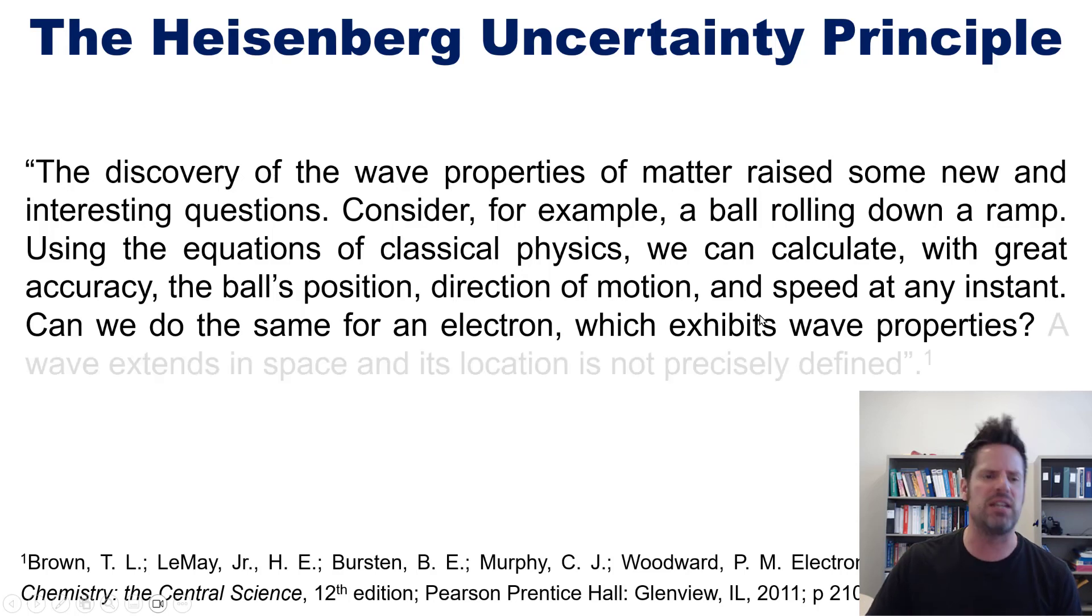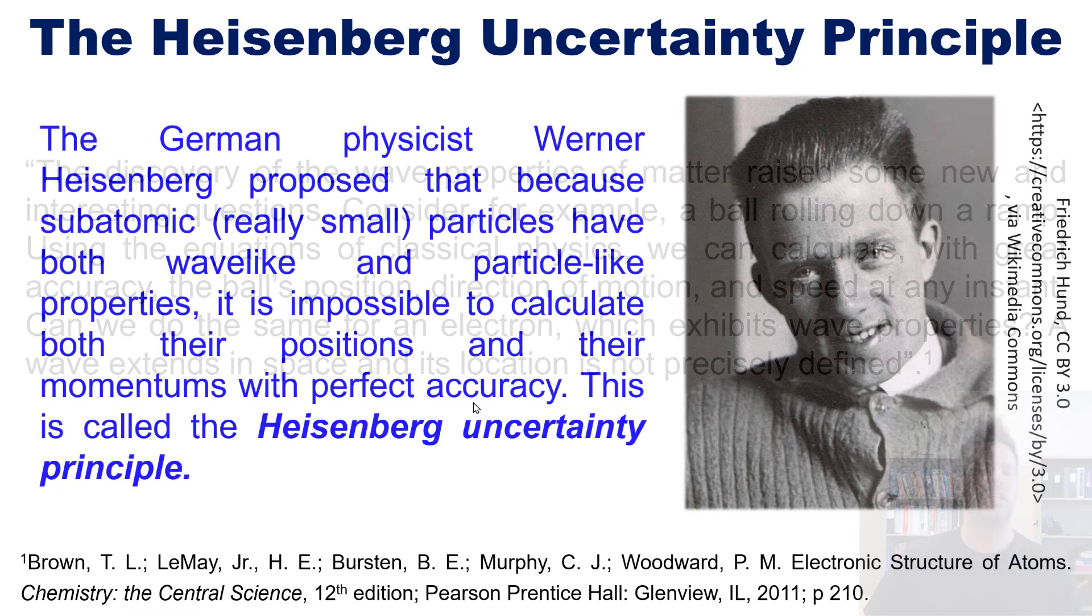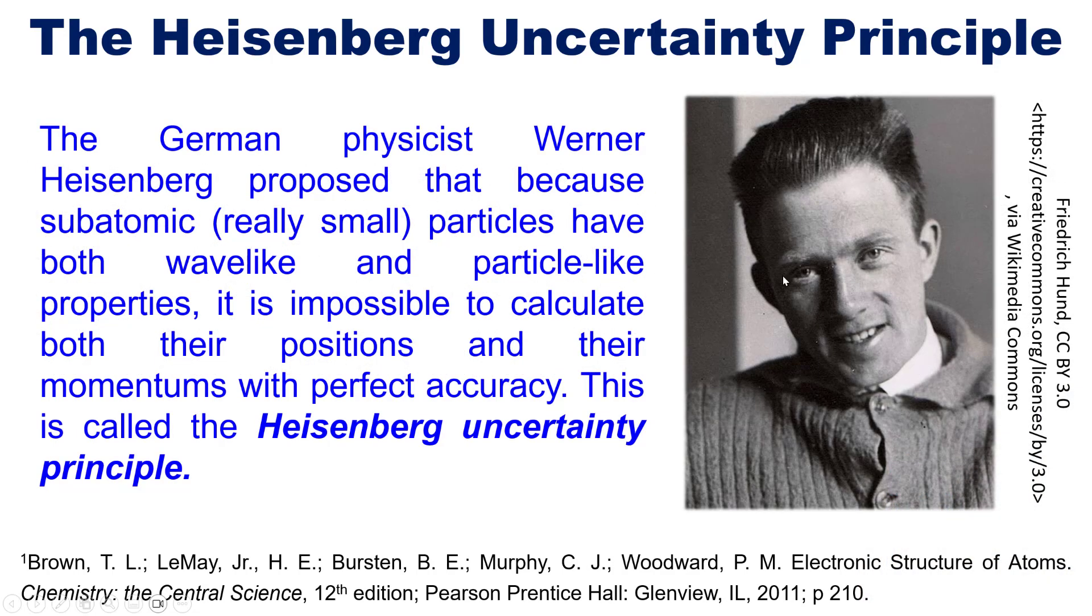The answer, as it turns out, is no. You see, a wave extends in space and its location is not precisely defined. So what of it? Well, the German physicist Werner Heisenberg proposed that because subatomic, that is really small, particles have both wave-like and particle-like properties, it is impossible to calculate both their positions and their momentums with perfect accuracy. This is called the Heisenberg uncertainty principle.